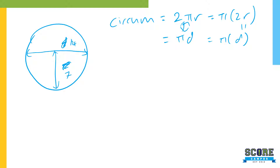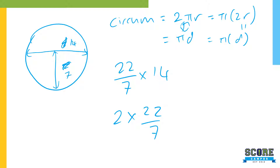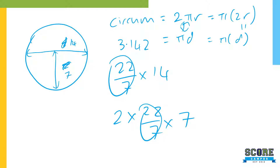So what's the circumference? You can take 22/7 times 14, or you can do 2 times 22/7 times 7, or change it to 3.142 and get a similar answer. I'm using 22/7 here because I can cancel. Using 3.142 will give a similar answer but is more accurate. That's how you find the circumference of a circle.